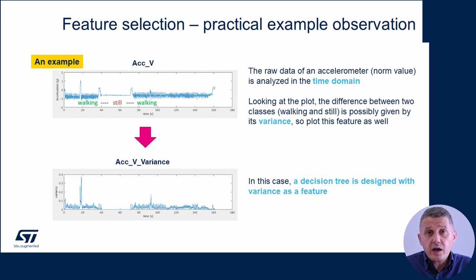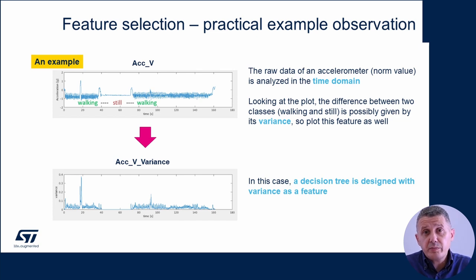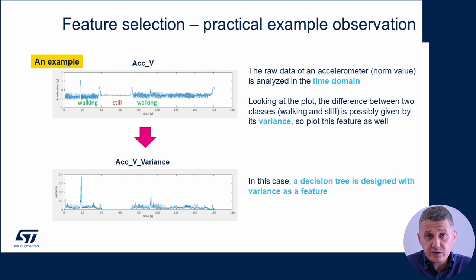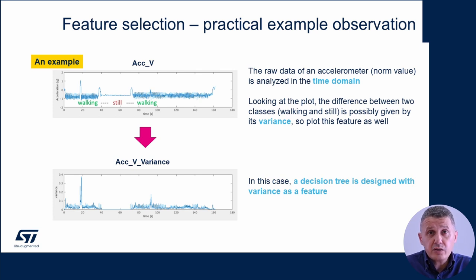Let's see how to discriminate features from a practical example. The first approach is to check the data in the time domain. In this example, we want to discriminate whether a person is walking or not, leveraging raw data from an accelerometer. Just looking at the plot, it's evident that the variance of the signal is a key feature we will use in order to classify.